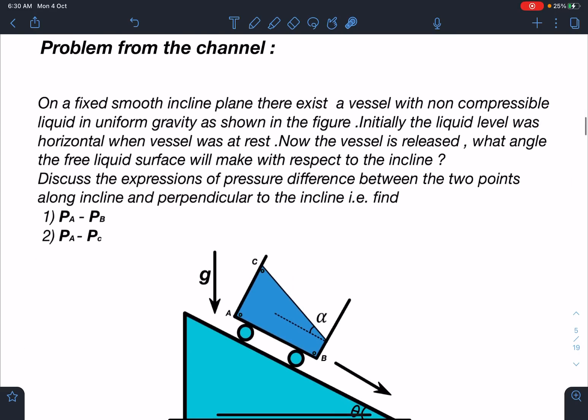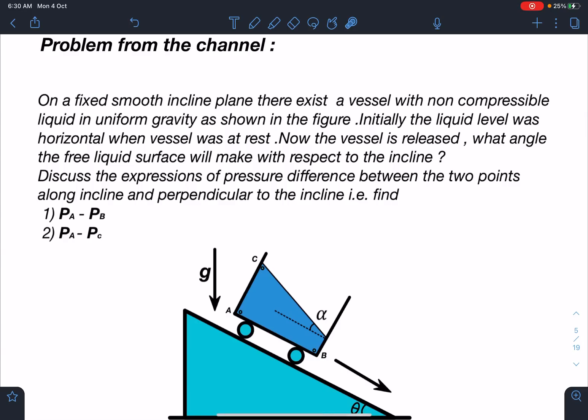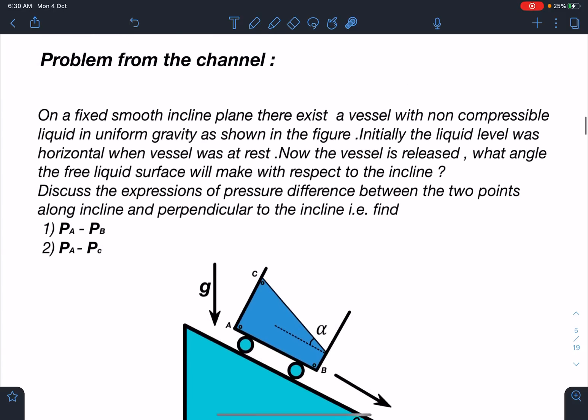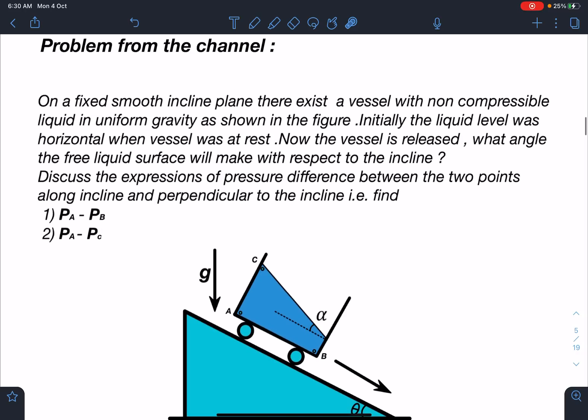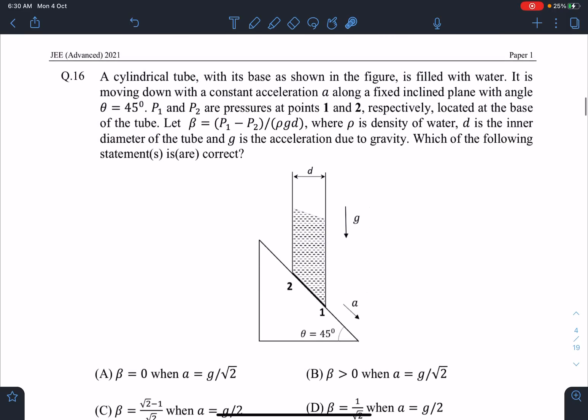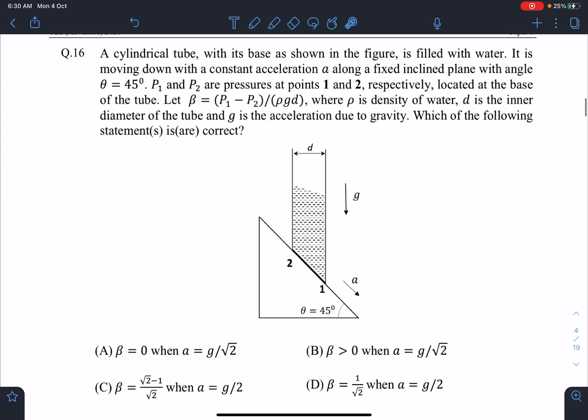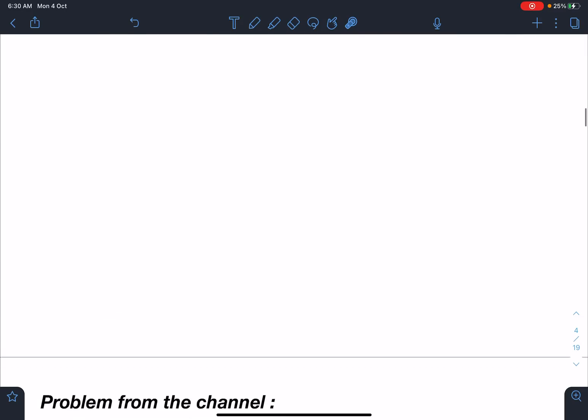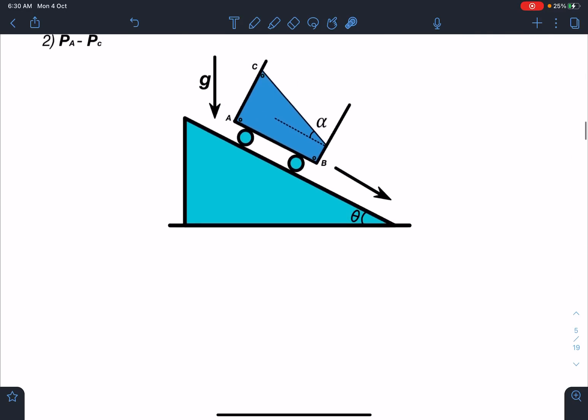This is the problem from the channel. You can see how similar this problem is. Here also pressure at point A and B they are discussing, and the angle the free surface of liquid will make with respect to the inclined plane. Anyone who has seen this video probably won't be making mistakes. It's pretty easy by using the logic of g effective. I was puzzled, and those kind of feelings are there in my mind.